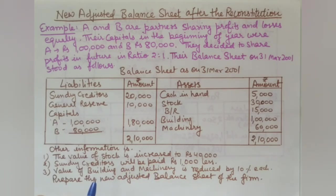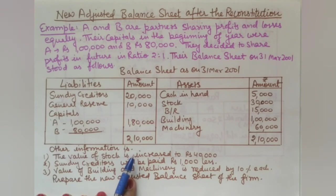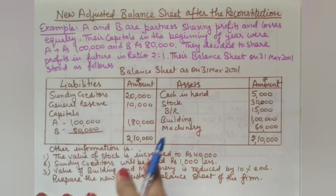Hello everyone, welcome once again to Commerce Made Easier. In today's lecture of accountancy, we will discuss the new adjusted balance sheet after the reconstitution of the partnership firm. After reconstitution, all adjustments related to partners are made — revaluation account, partners' capital account — and finally the adjusted balance sheet is prepared.